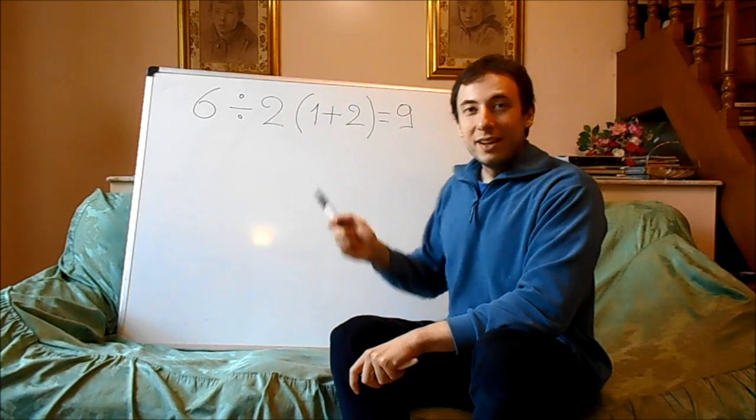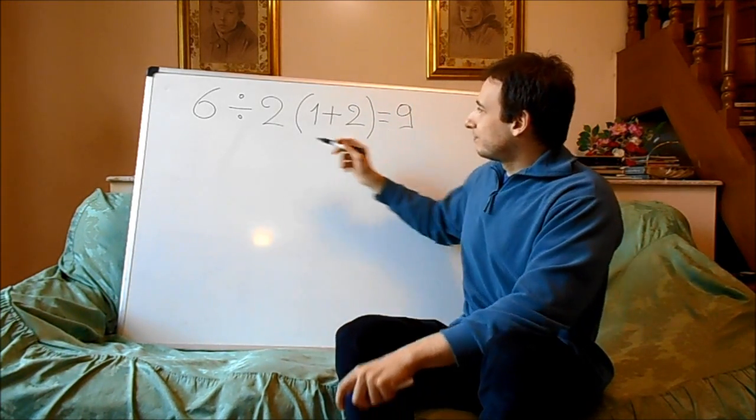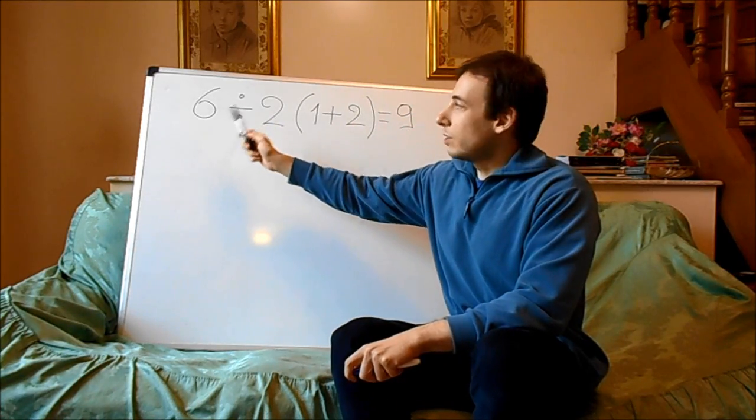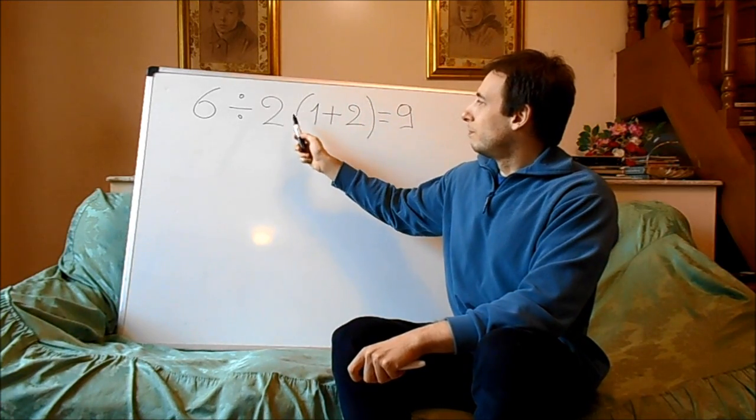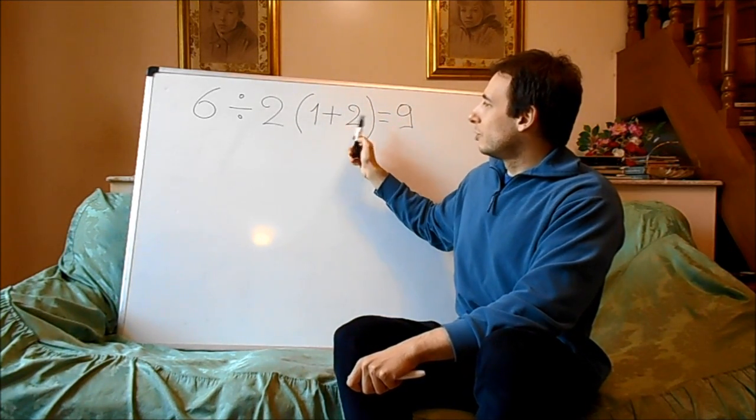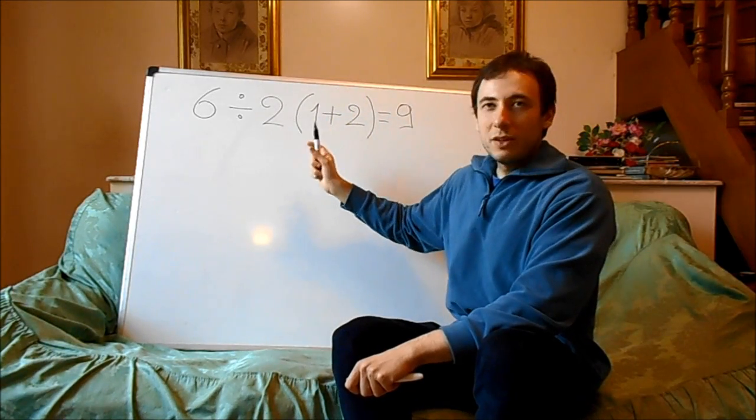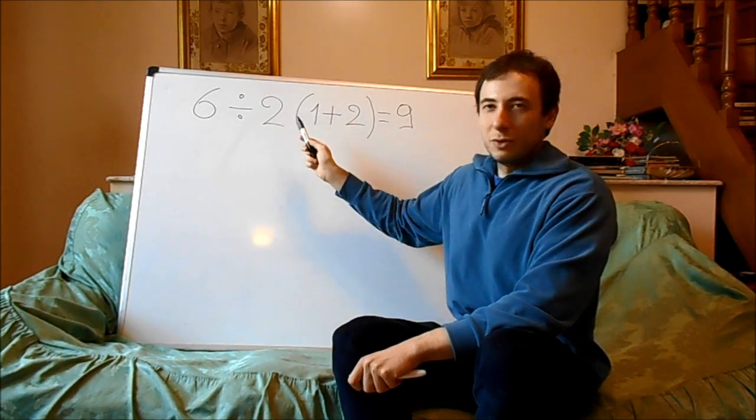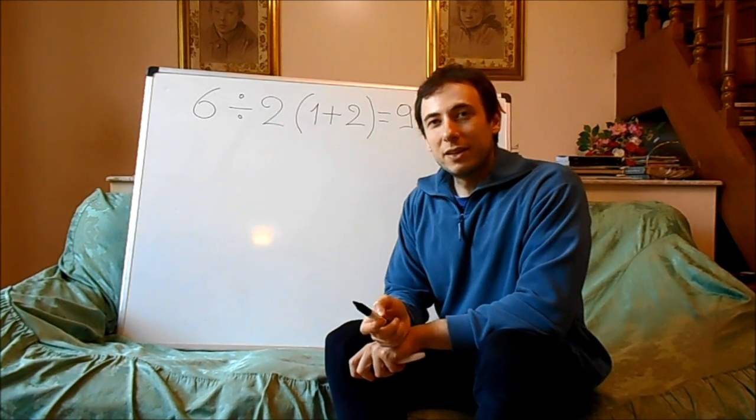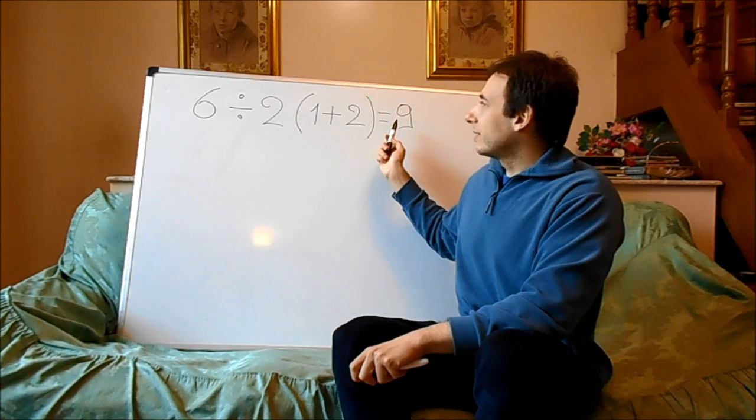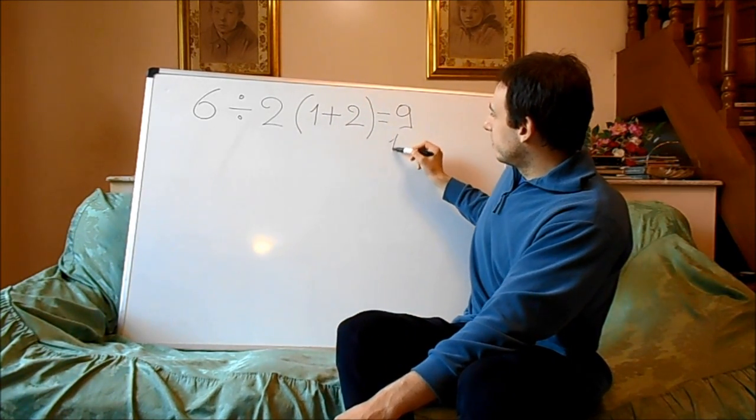Instead of let's say 1, if we assume that 6 divided by 2 multiplied by 1 plus 2, and this would be one only block to do before the division, we would obtain 1 instead of 9. But this is wrong, 1 is wrong.